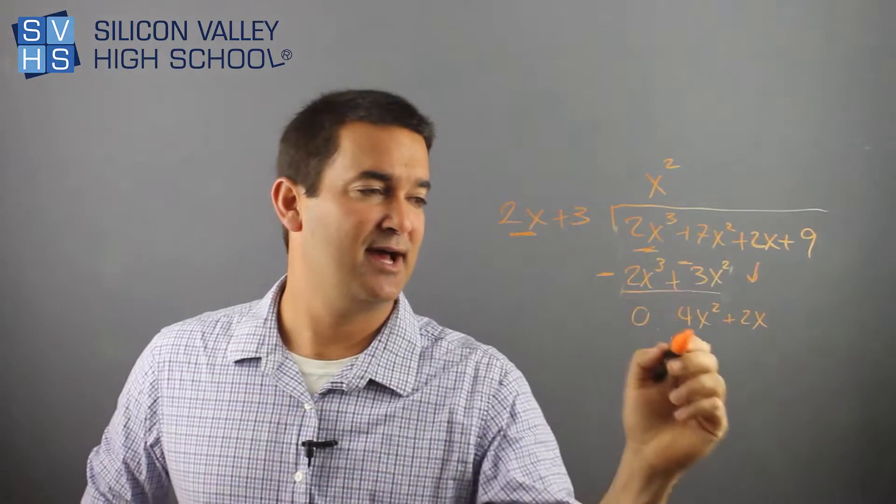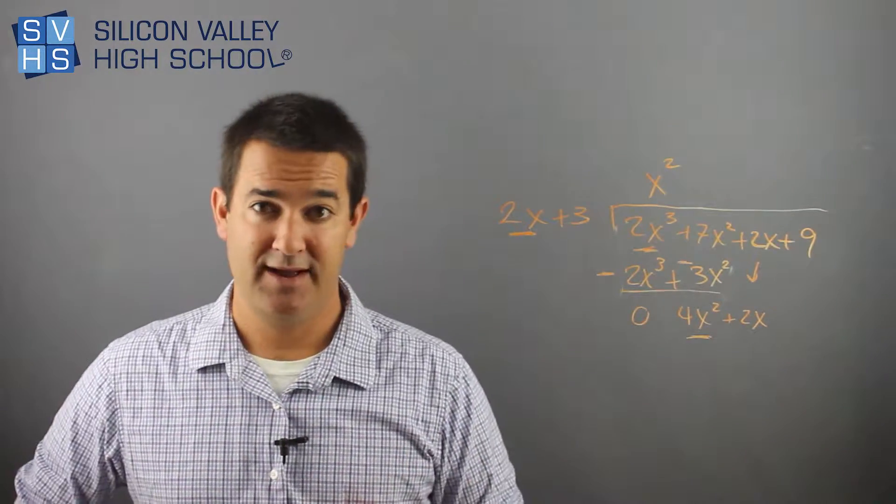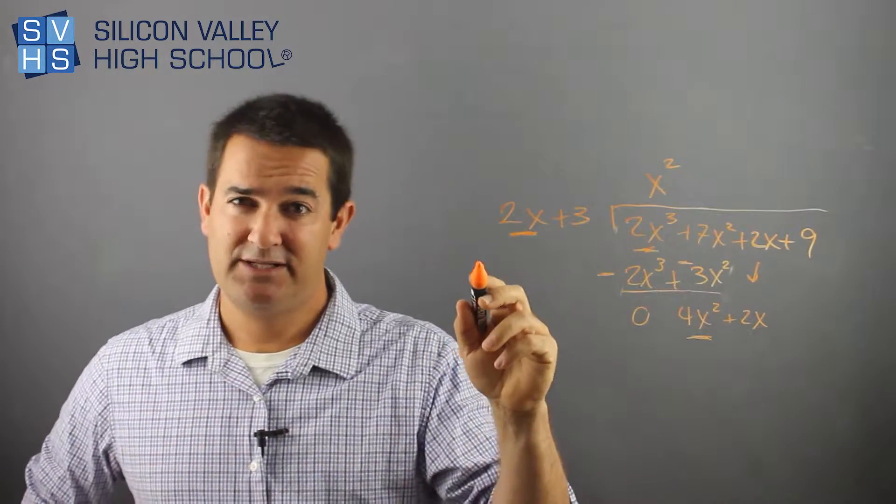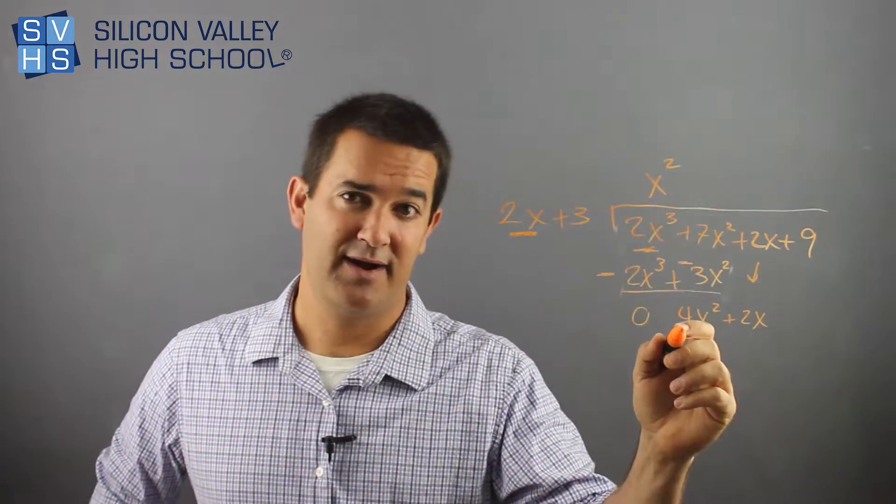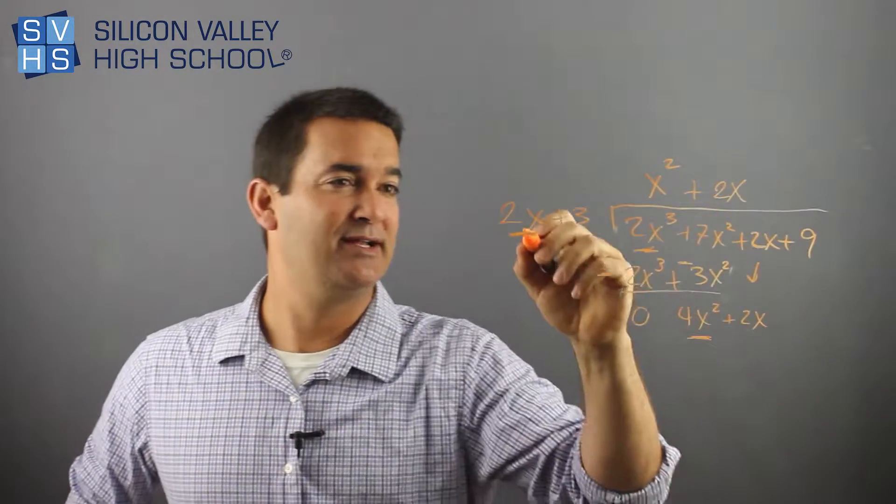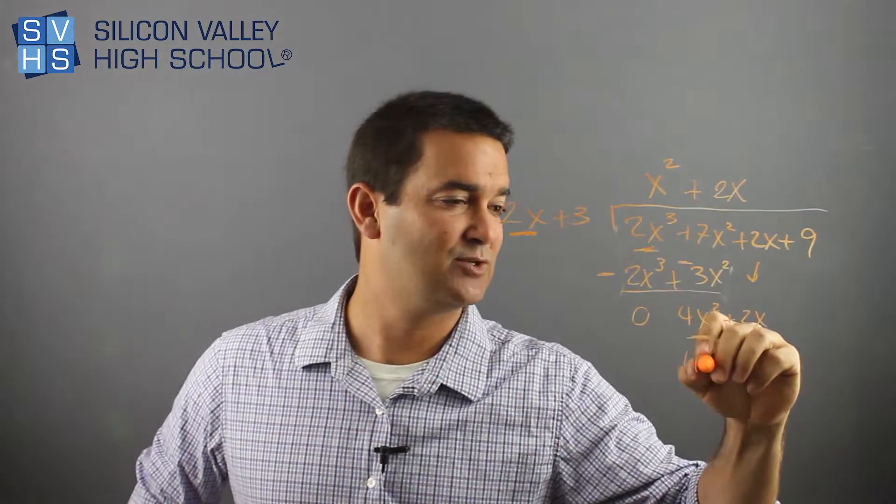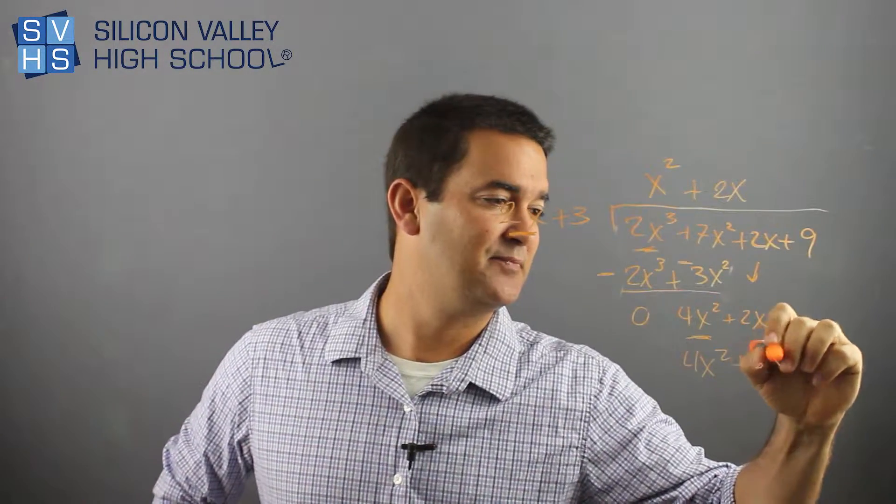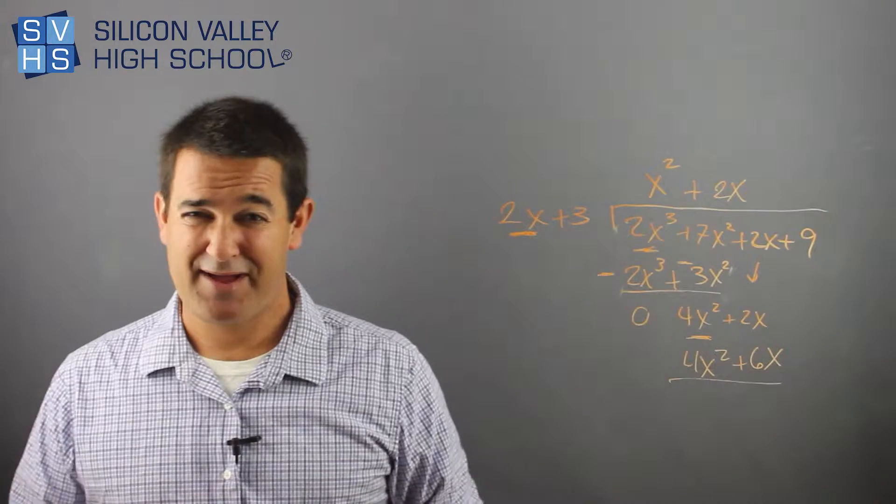Now, back to my weird logic. I'm only going to look at the first guy and the first guy. Forget the 3, forget everything else. I only look at the first guy and the first guy. What would I multiply 2x by to get 4x squared? And because I'm a nerd, I'll just help you. It's 2x. 2x times 2x is 4x squared. I multiply it to both, so then it's plus 6x.